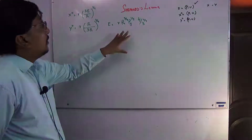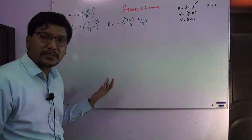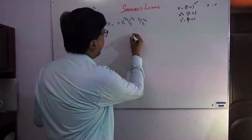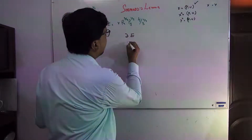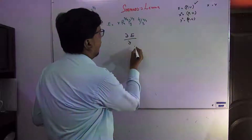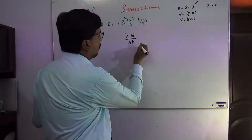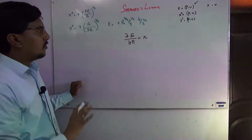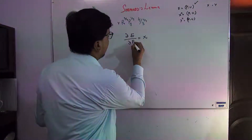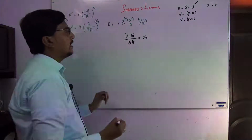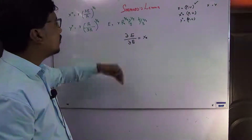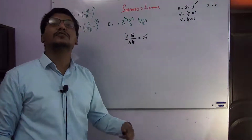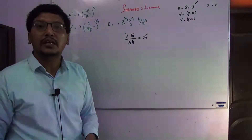Shephard's Lemma says that if we take the partial derivative of the expenditure function with respect to prices — say the price of the i-th commodity P_i — we get the Hicksian demand function of the i-th commodity. So if we take the partial derivative with respect to P_x, we get the Hicksian (compensated) demand function for X, which assumes constant utility and expenditure minimization.